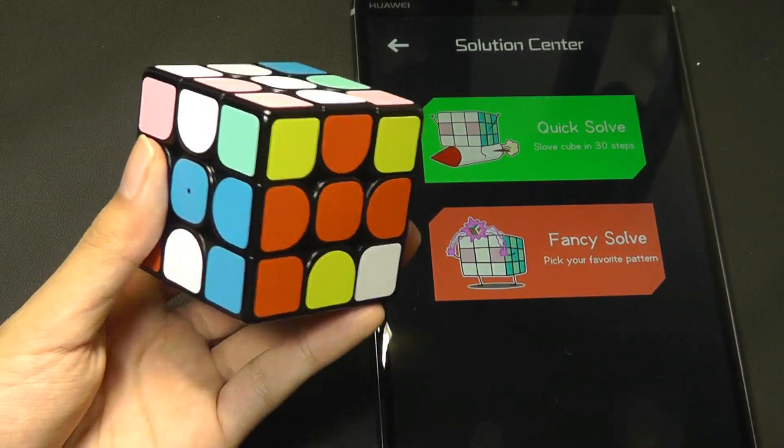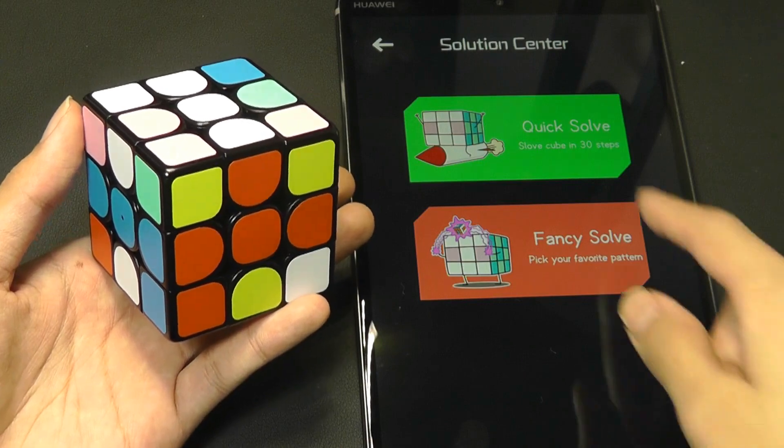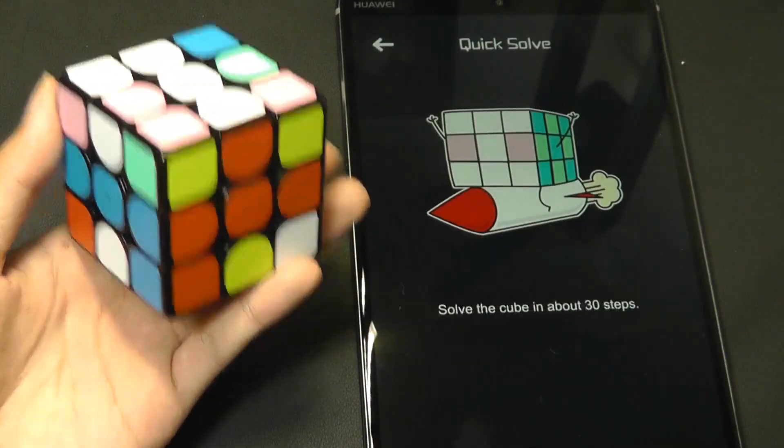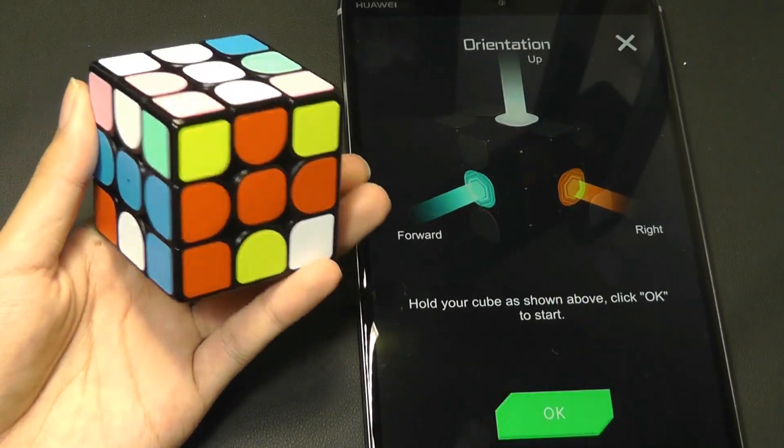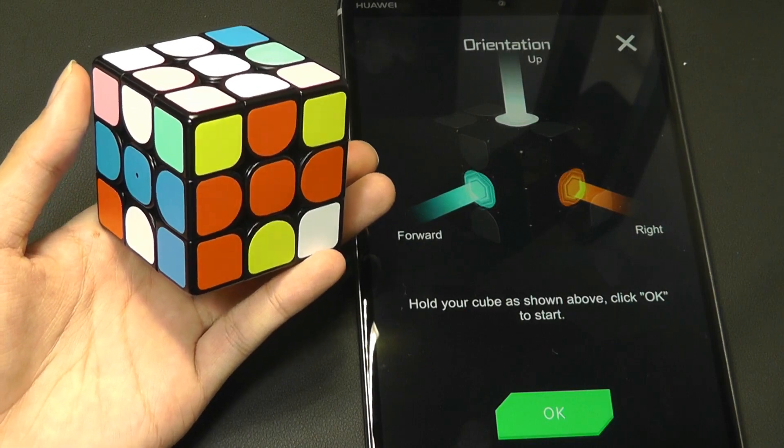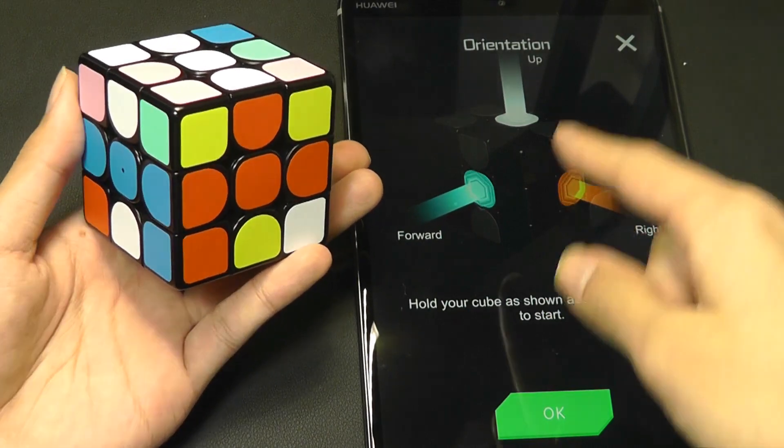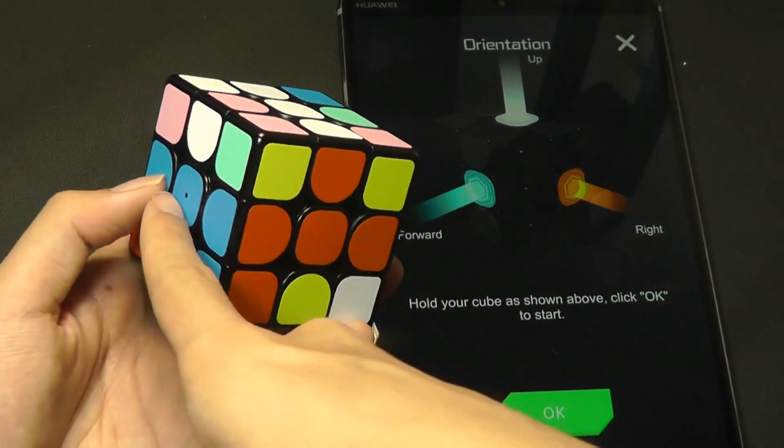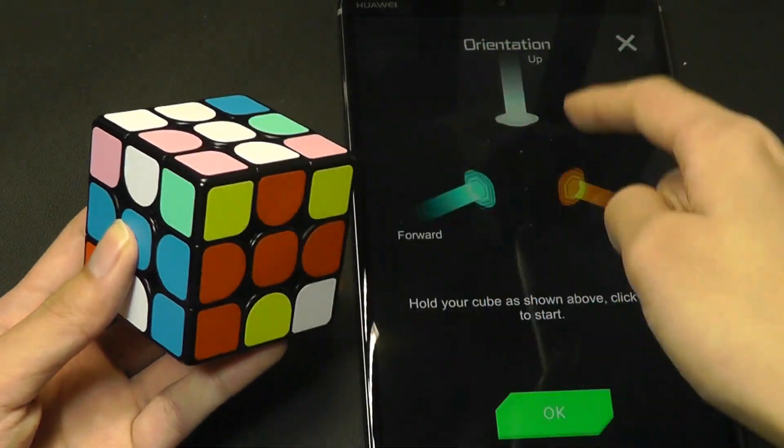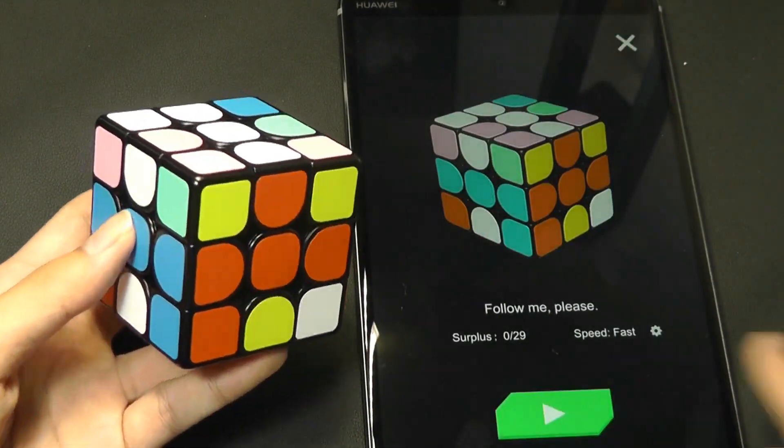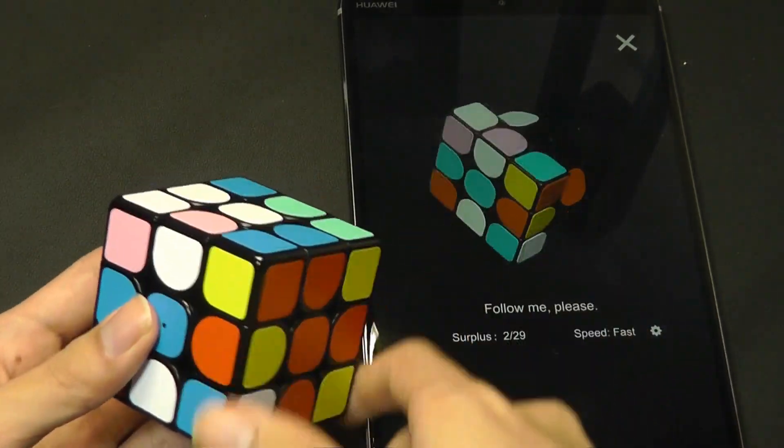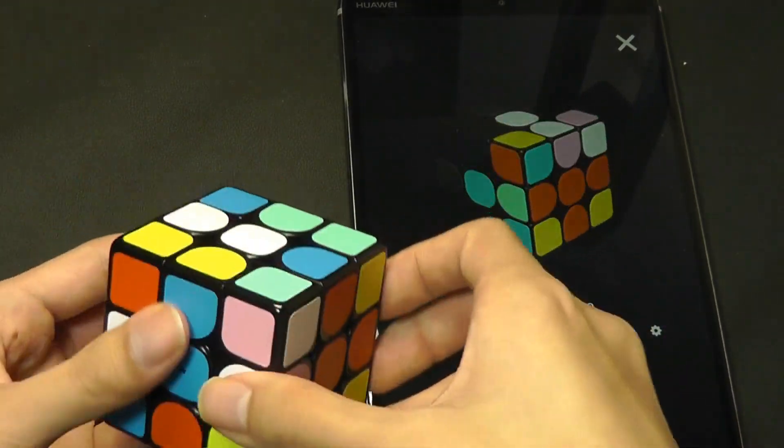If you ever get stuck and you don't really know how to revert this to a completed Rubik's Cube, you can tap on the quick solve, and it's going to know the state of your cube and solve it in 30 steps or less using the algorithm on board. So it tells you to orient yourself again using blue on the side here, right should be red, top should be white. We tap on OK, and I can just then follow along the tutorial one step at a time.